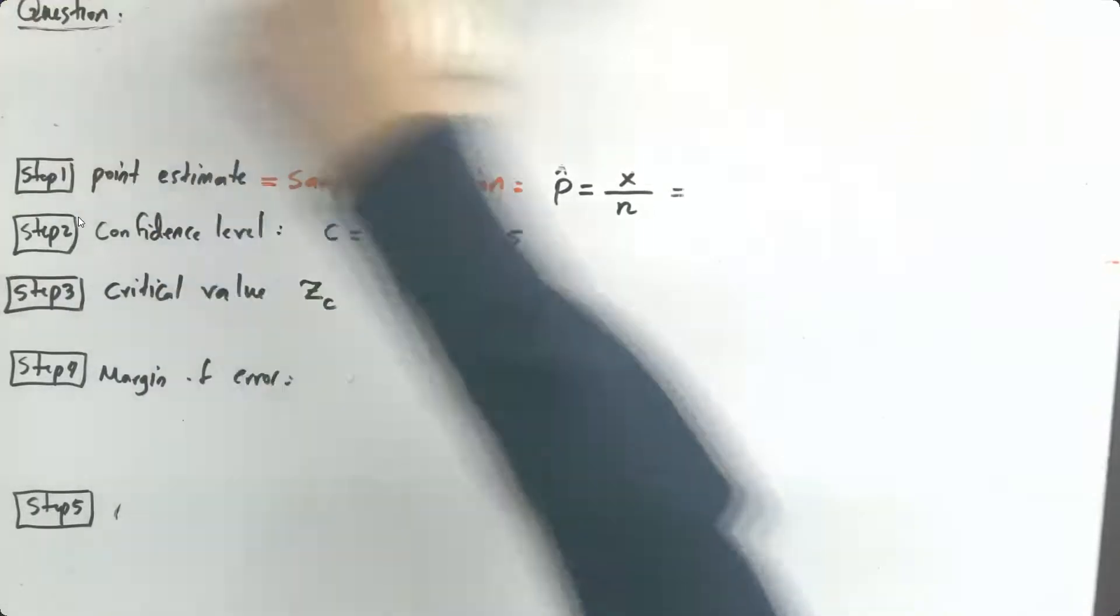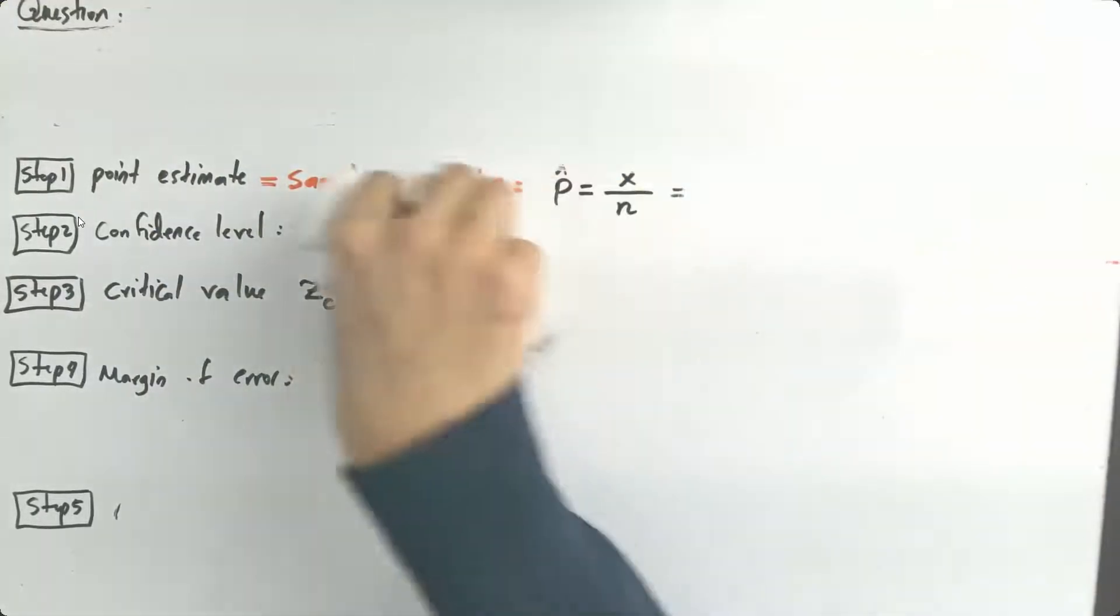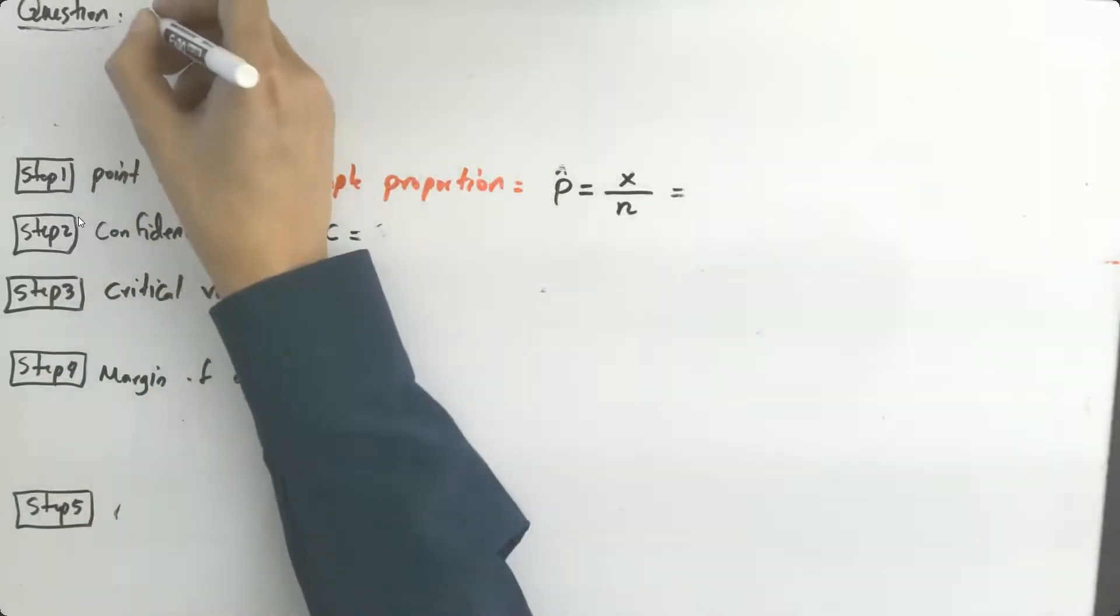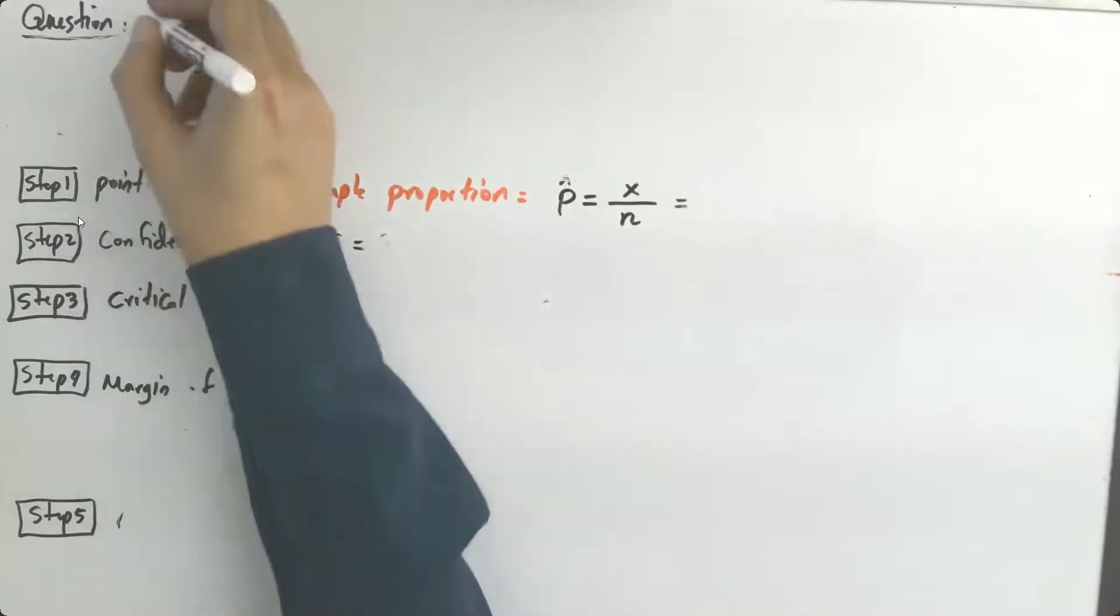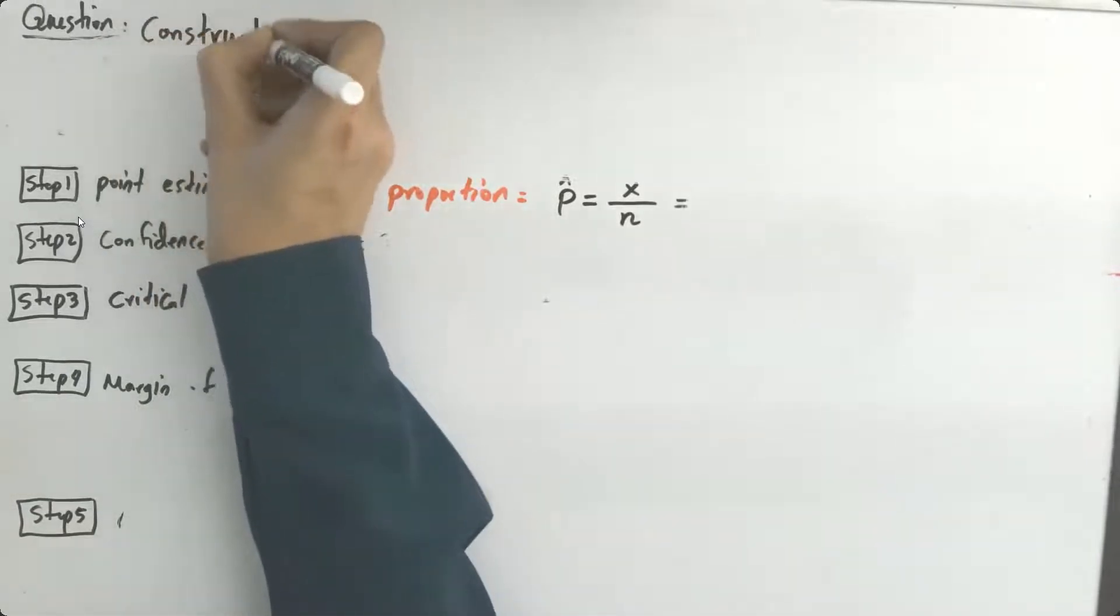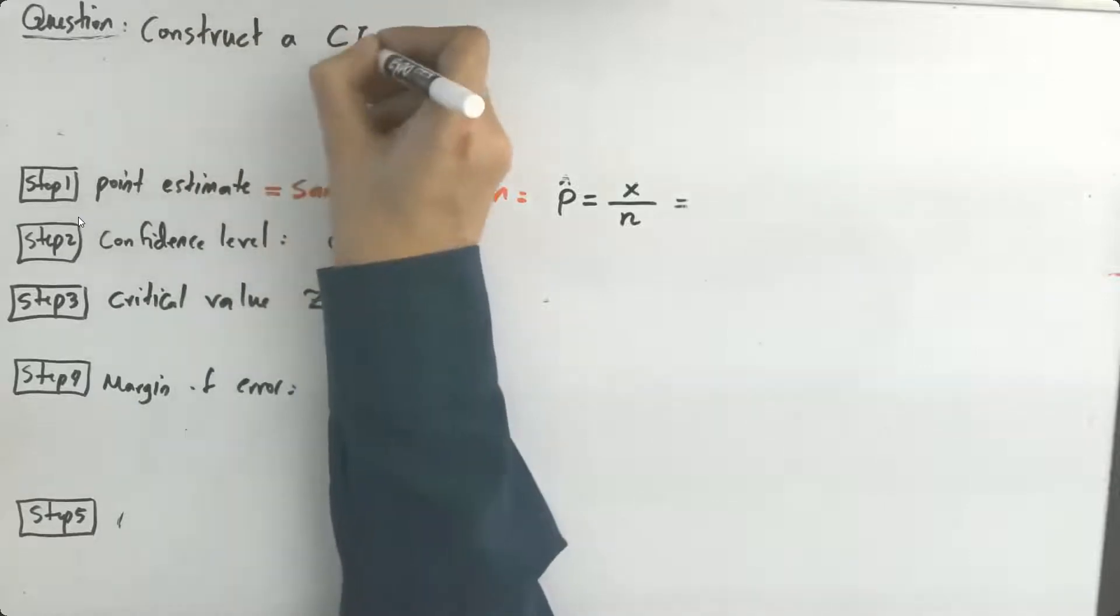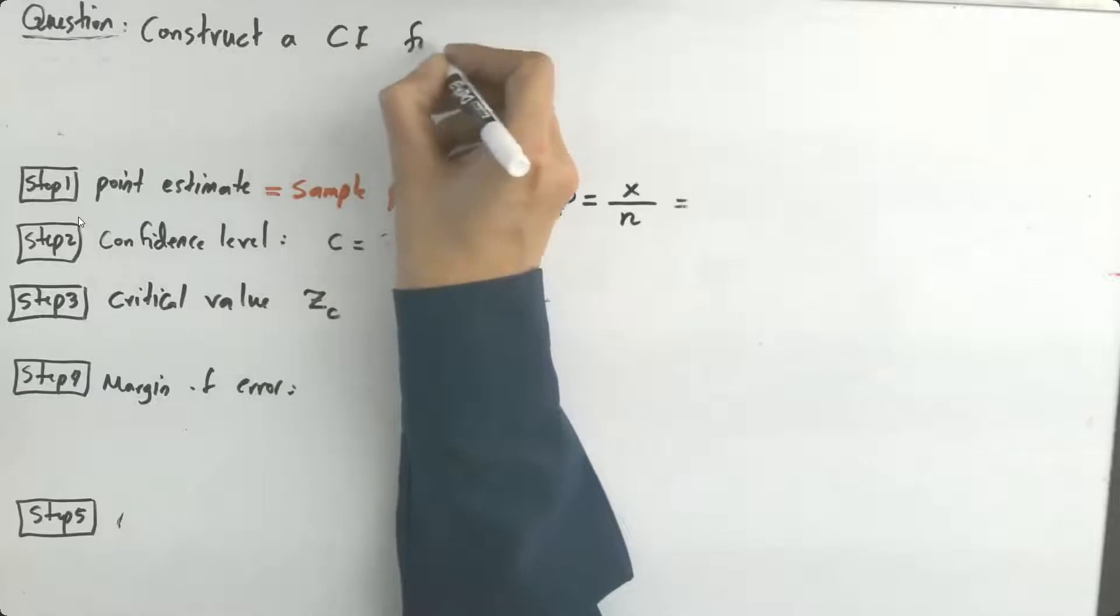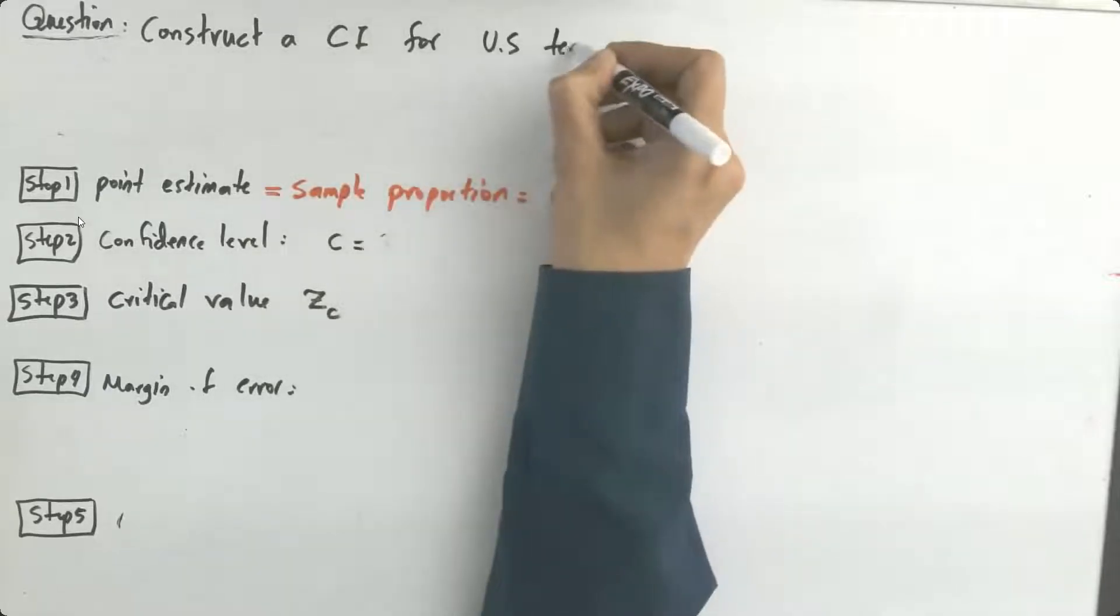Our question says, hey, find the confidence interval, build the confidence interval, construct a confidence interval. CI, confidence interval for U.S. teens